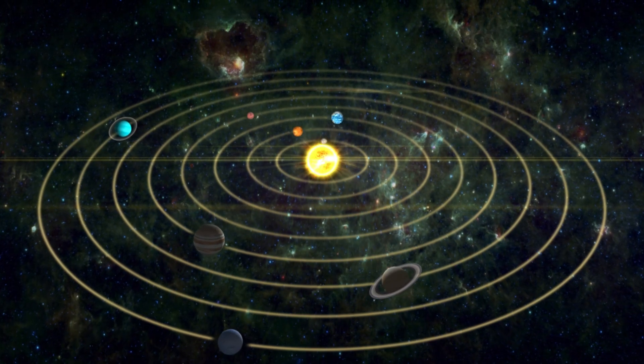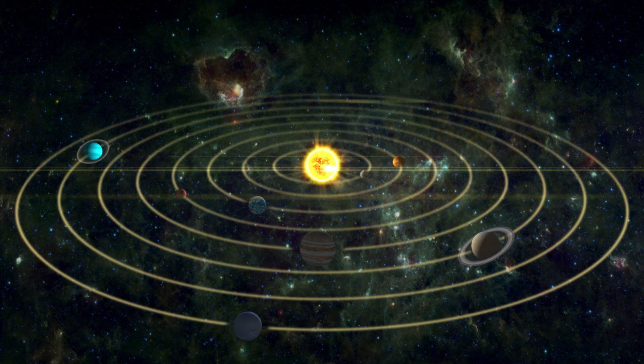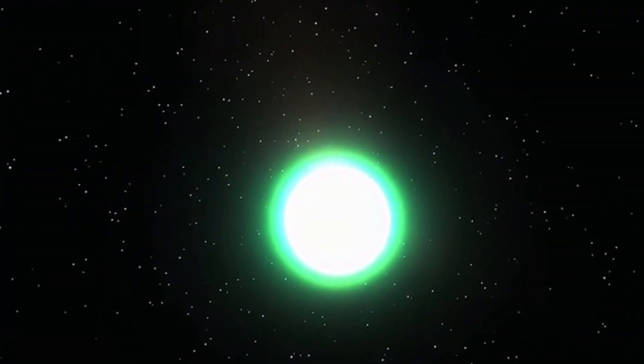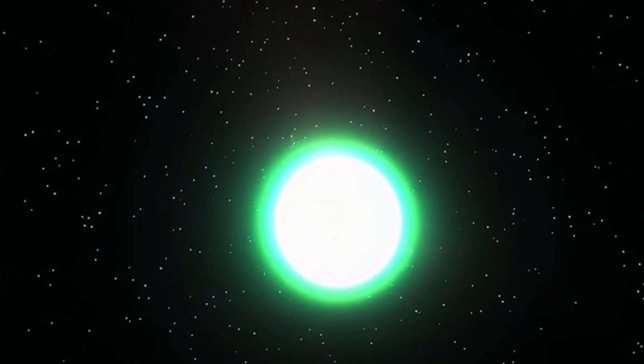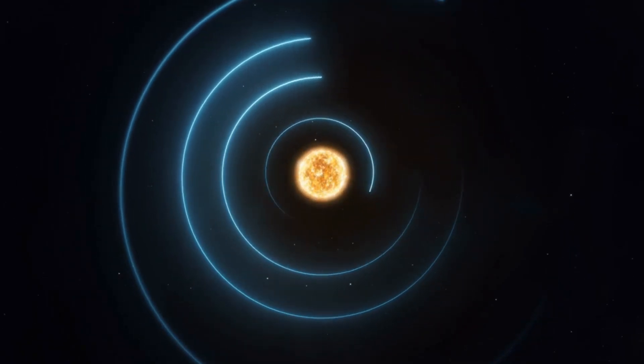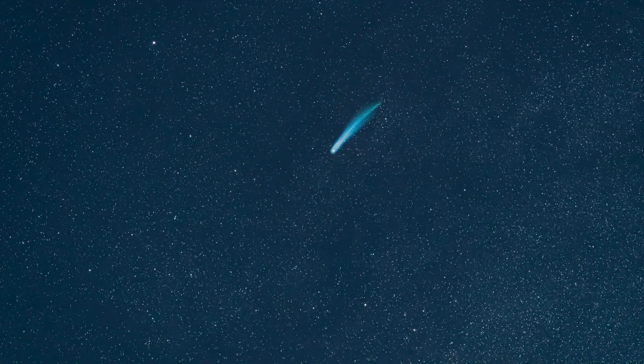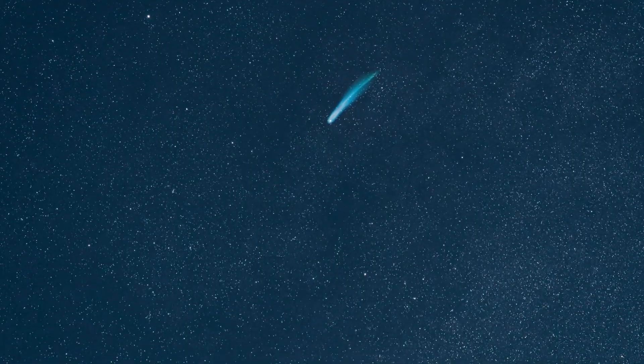As it continues its descent toward the heart of our solar system, every telescope, orbital probe, and ground-based observatory that can possibly track it is now aimed at its faint, vanishing glow. The closer it gets, the harder it becomes to see, the sun's glare drowning out the fragile light it reflects. Yet scientists persist, desperate to capture any hint of change in brightness, color, or trajectory before it disappears into the blinding brilliance of daylight.